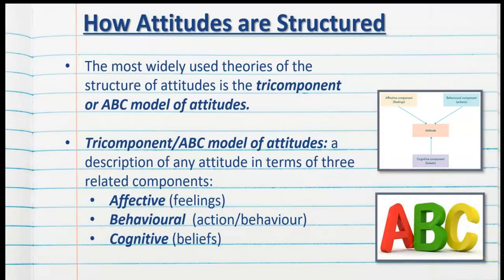The most widely used theory of the structure of attitude is the tricomponent or ABC model of attitudes — both terms are correct. The tricomponent or ABC model is a description of any attitude in terms of three related components: the affective, or A, relates to the feelings or emotions; the behavioural is the actions or behaviour; and the cognitive is the beliefs or thoughts.